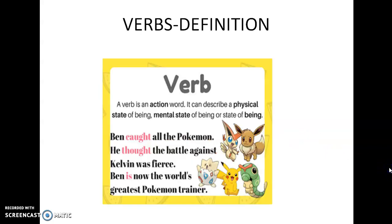Now, verbs definition — just a quick recap. What are verbs? A verb is an action word. It can describe a physical state of being, that means the main verb or action verb, or it also describes a mental state. Mental state includes all the actions that do not necessarily involve the movement of your body physically. For example, certain actions like thinking — can you see someone thinking? No, because it is a process going inside their body. Sleeping — your body is not physically moving. So these are mental states. Then you have a state of being, which includes all the helping verbs or auxiliary verbs.